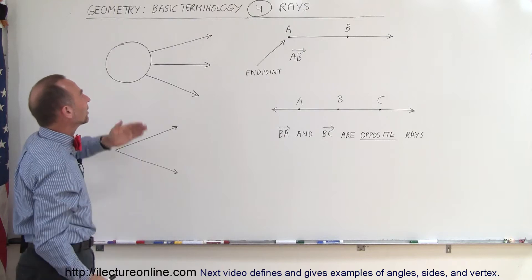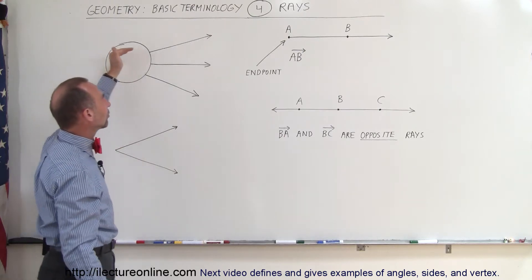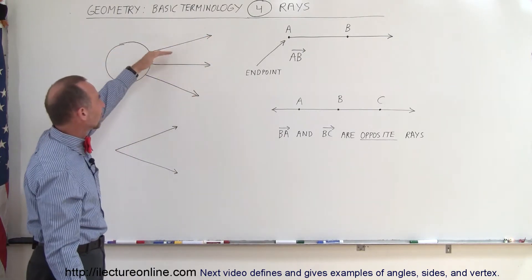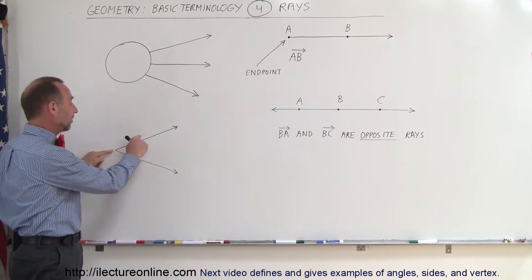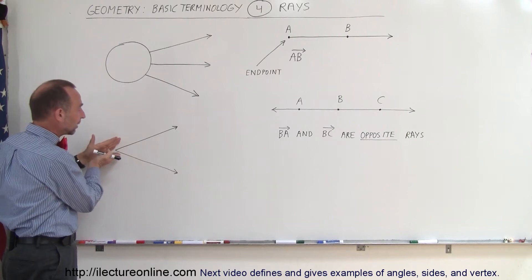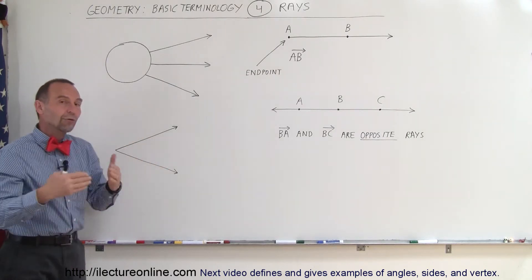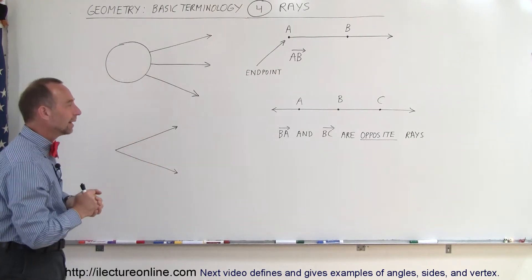A ray is simply a line that has an endpoint and goes on indefinitely in any direction. Here are three rays that are drawn. Here we have two rays that have a common endpoint, and of course two rays that have a common endpoint like this that are pointing in different directions form an angle, and we'll talk about that later.